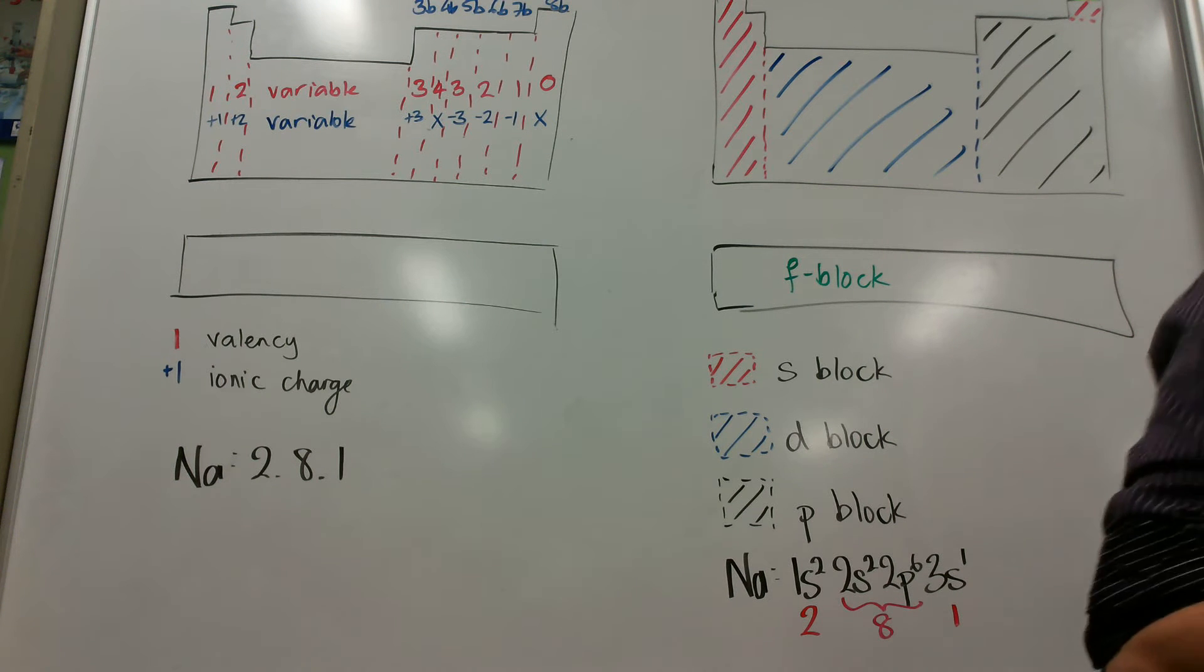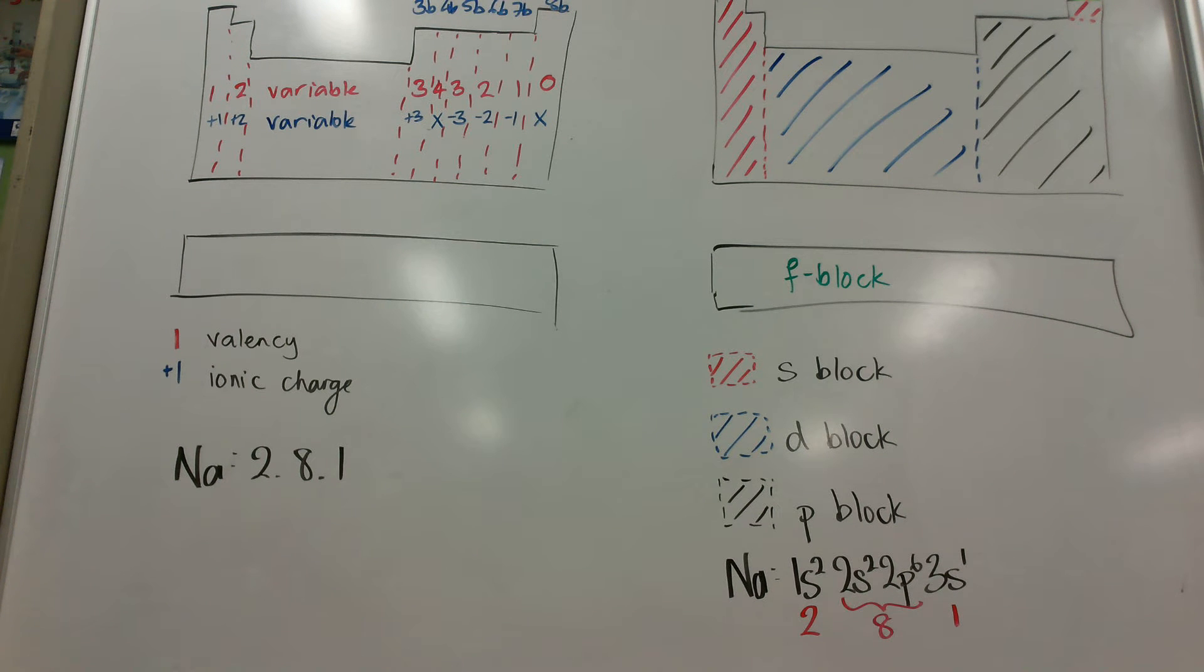In this we're going to look at how we used to work out what charged ions would be, or what the valency of an atom was, and then we often used that to do things like Lewis structures or to work out ionic formulae.